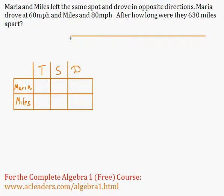So here's what I'm going to do. I'm just going to start with a little diagram. And that was a terrible looking arrow. Let's say that that's where they were at first. Maria went this way, Miles went the other way.